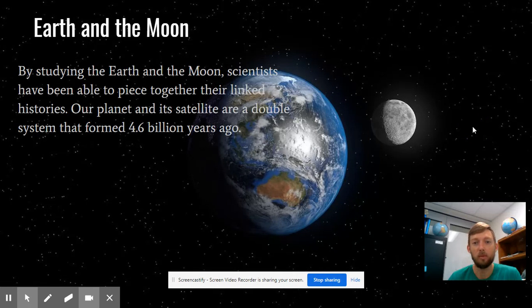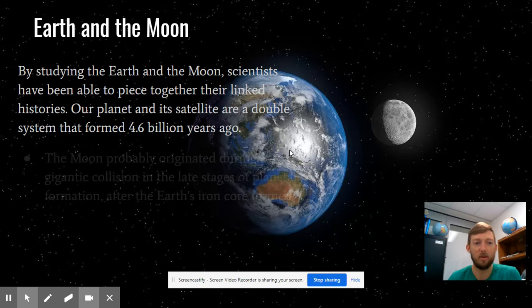So the Earth and the moon, they are a combined system. They formed about 4.6 billion years ago. The moon is our satellite, which means that it rotates around us, just like we are a satellite of the sun. We rotate around the sun.